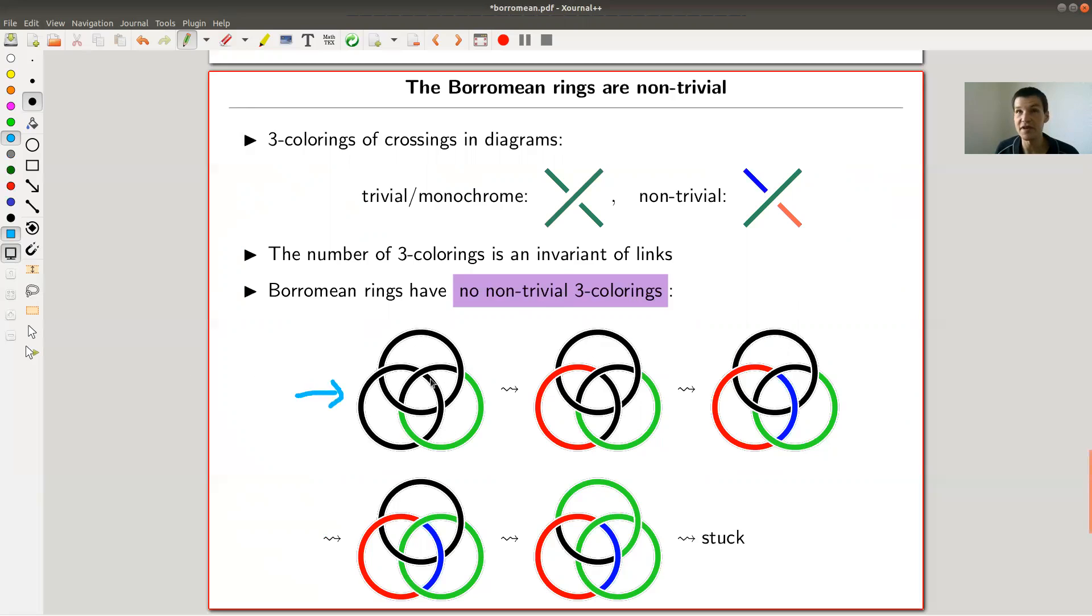It's the following idea: you take some diagram like this one, which is a diagram of the Borromean link. You have two rules for how crossings can look like. In my case I have three colors: green, blue, and red. Any crossing has to be colored, and you have two options for any crossing. You can either color it monochrome, like completely green, or all three colors have to appear. This is non-trivial coloring, for example green, red, and blue. They have to appear in this fashion: the strand that goes over just gets one color, and the other one is split into two colors.